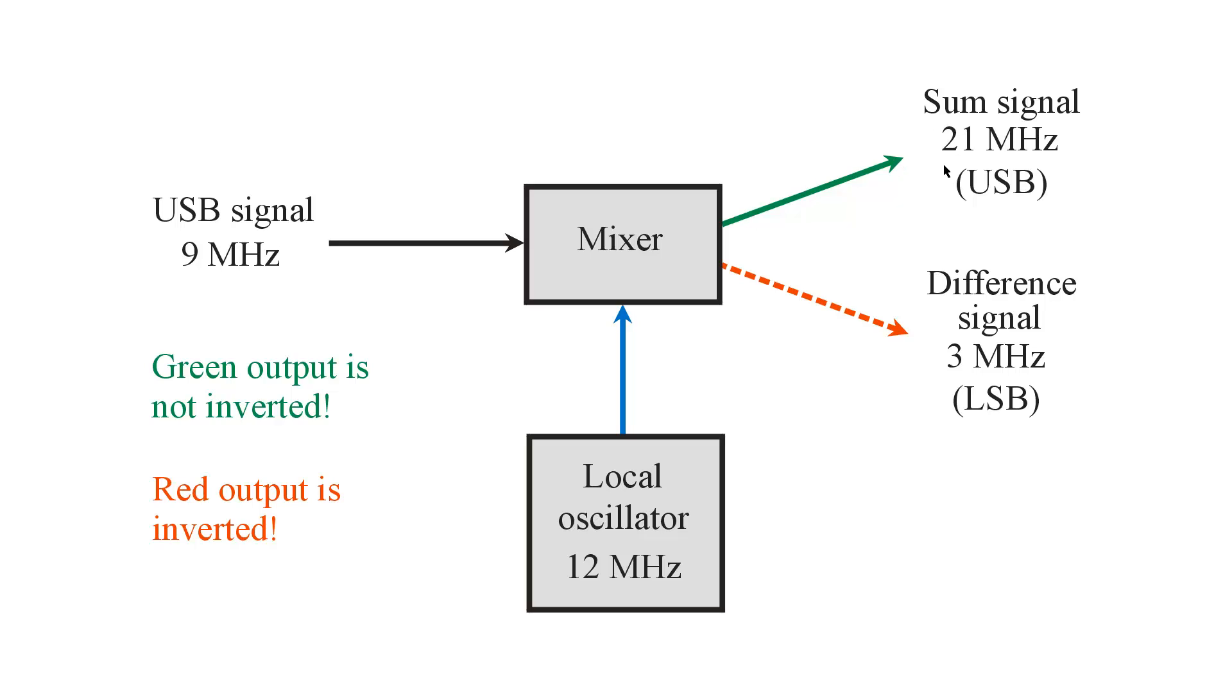So your green output signal, the sum signal, is right side up, whereas your red signal, the difference signal, is upside down. That principle will operate in any single sideband mixer that can take either the sum or the difference as the output.